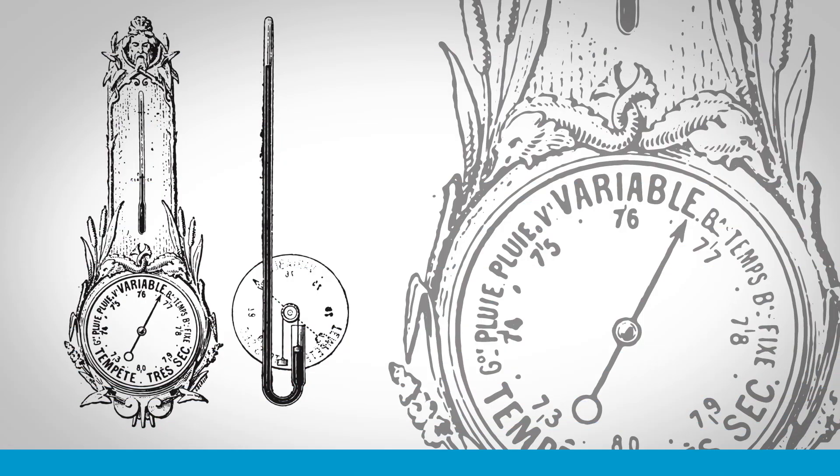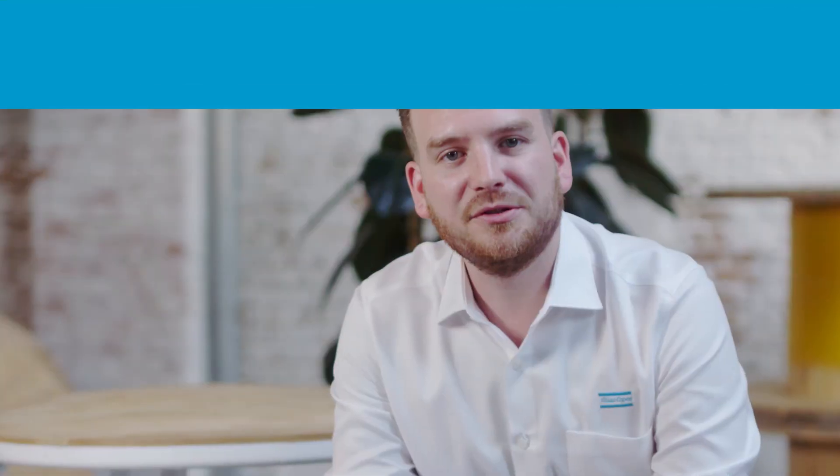And so the mercury barometer was born. With measurements in lengths of mercury, and still today, much of the vacuum world measures pressure in millimeters of mercury, or as we call it now, Torr.